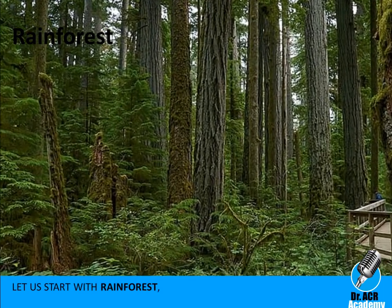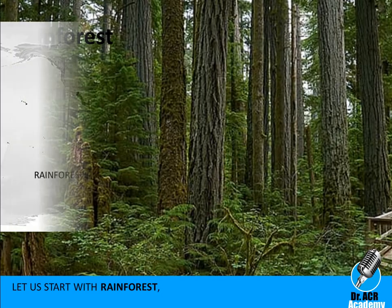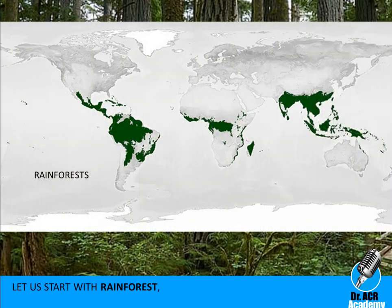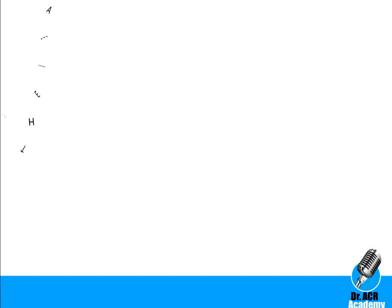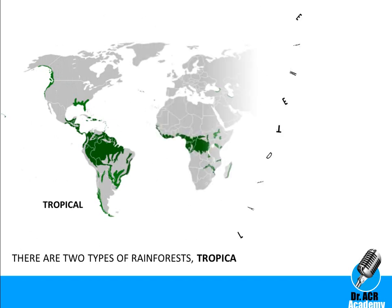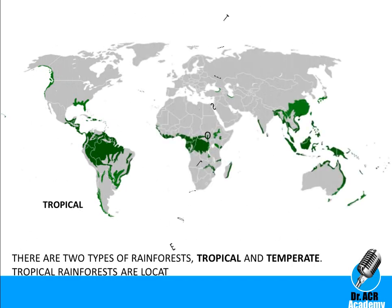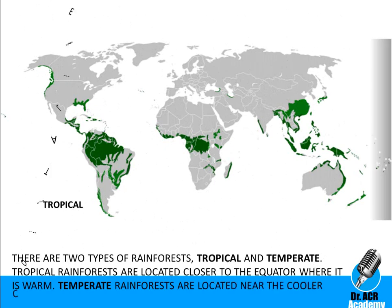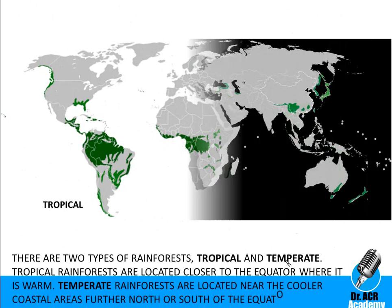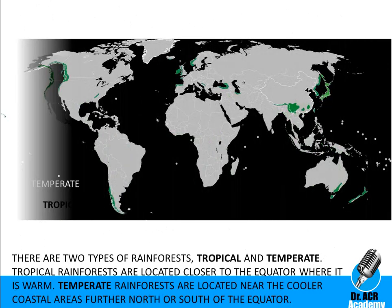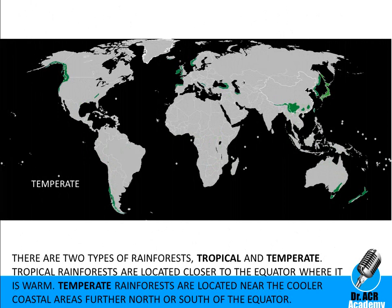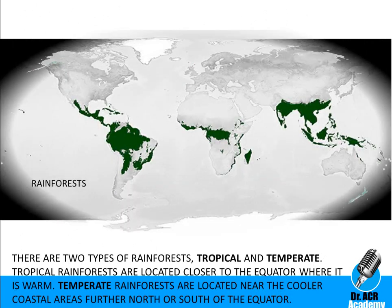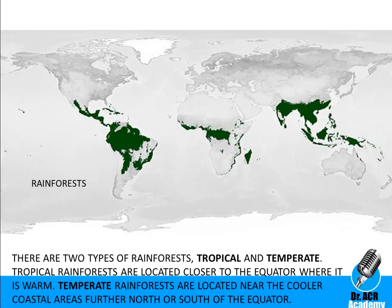Let us start with rainforests. There are two types of rainforests: tropical and temperate. Tropical rainforests are located closer to the equator where it is warm. Temperate rainforests are located near the cooler coastal areas, further north or south of the equator.